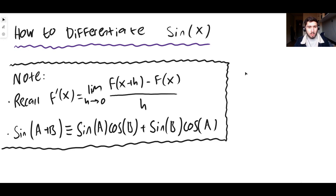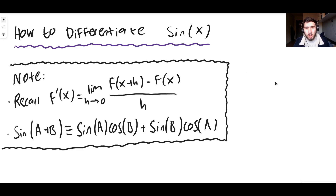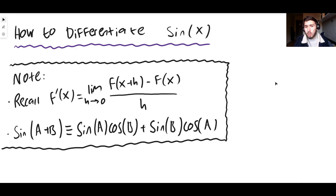We need to know two things. One, we need to know that the derivative of any function f of x — f prime of x, that's what that symbol is, it's an apostrophe, we say f prime of x — the derivative is equal to the limit as h approaches 0 of f of x plus h minus f of x divided by h. That is the definition of the derivative of a function. There is a video where I have derived this formula as well, so you can check that out if you're not sure why that's true.